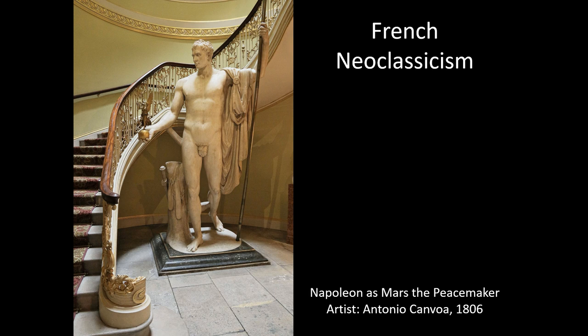One of the defining characteristics of late 18th century and early 19th century art was a renewed interest in classical antiquity, or as we learned in a previous lecture, classical revival. This was reviving not only the aesthetics of the art of the classical past — that of ancient Greece and Rome — but also reviving the culture as well.